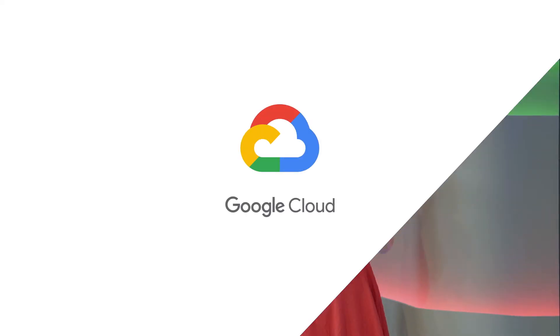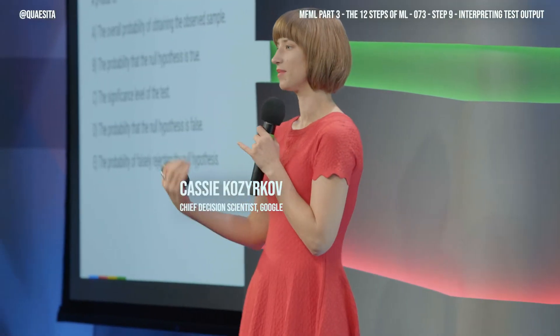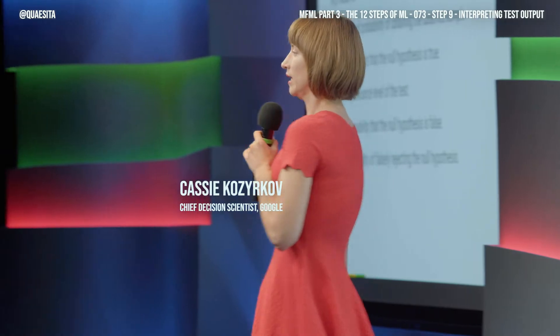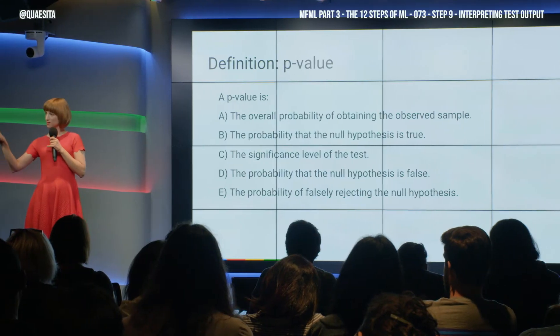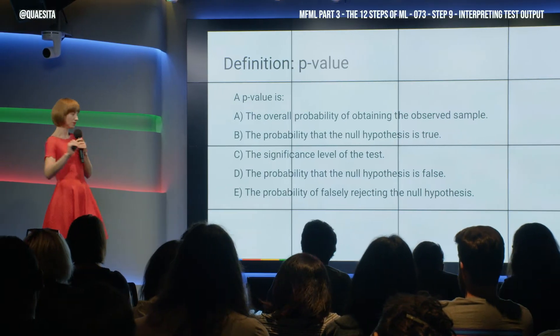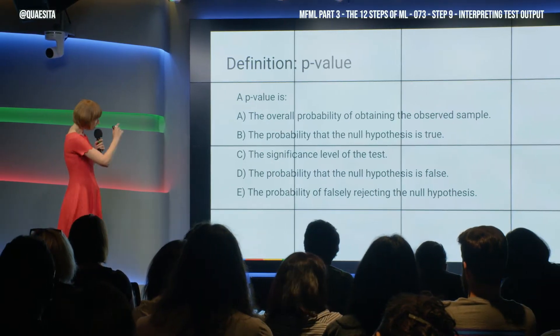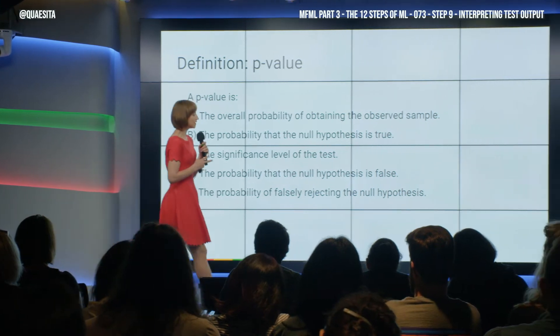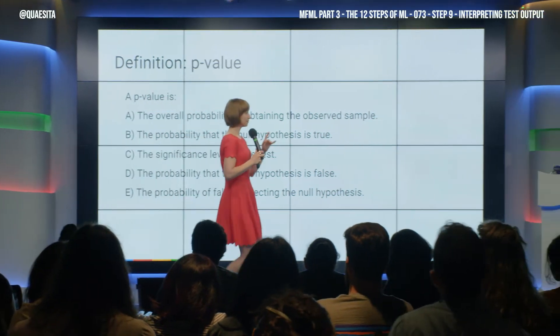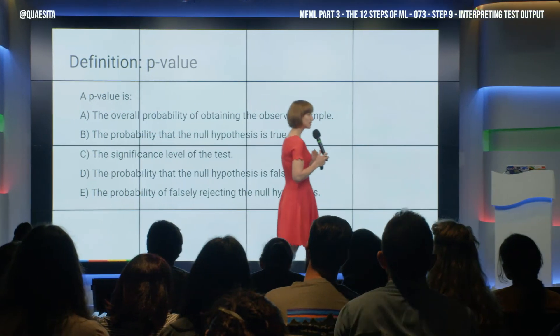What comes out of that code might be something like a p-value or a confidence interval. Most of you took statistics, right? You told me you did. So you won't mind a pop quiz, but we'll have a little twist.